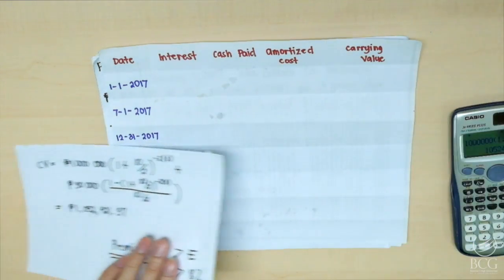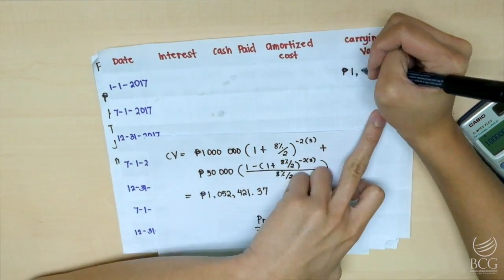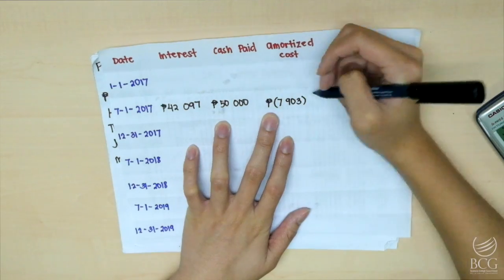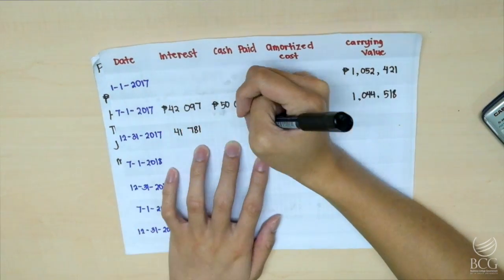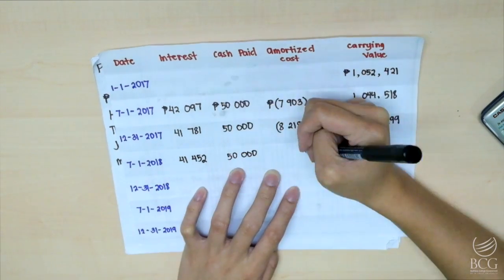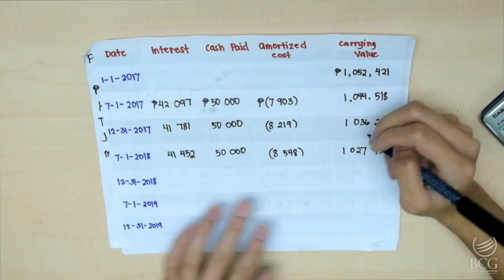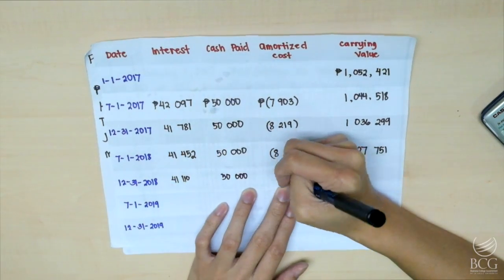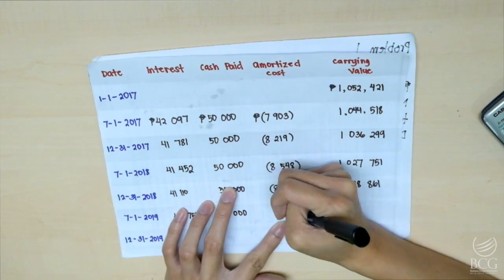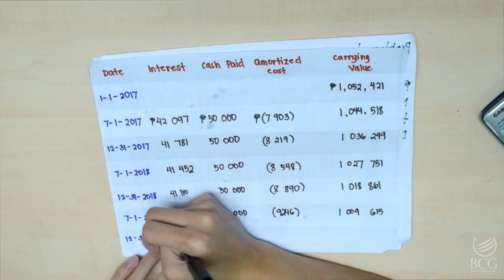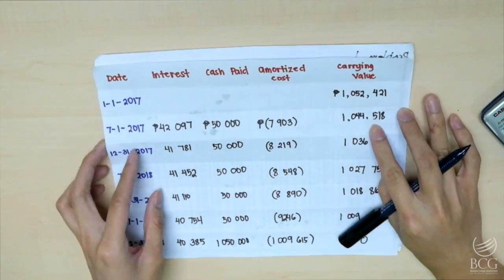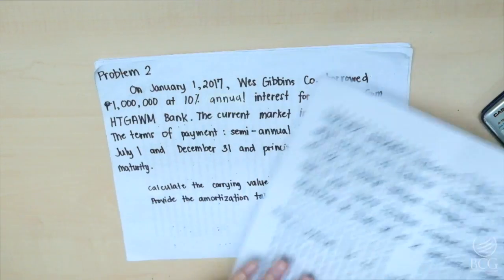Now let's begin with the amortization table. Let's try another problem — Problem 2.